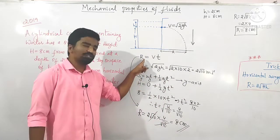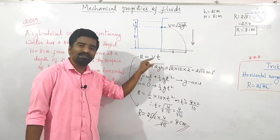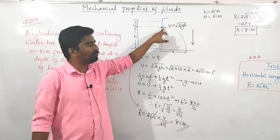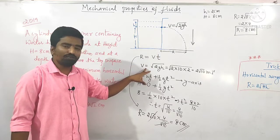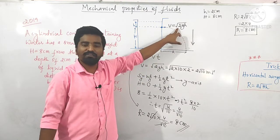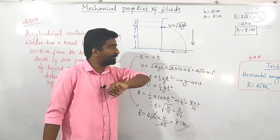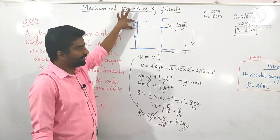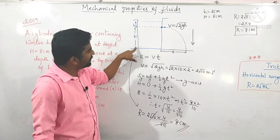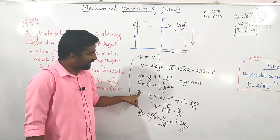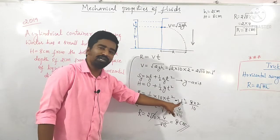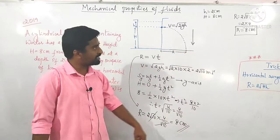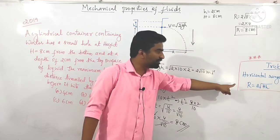This is very important because this question has also been asked in NEET as well as JEE. Sometimes they ask for the velocity of flow of liquid, which equals the velocity of a freely falling body where h is the height of the hole from the top of the liquid. H is the height of the hole from the bottom. They also ask for the time taken by fluid to hit the ground. The answer is 8 cm. You can use the trick formula as well.